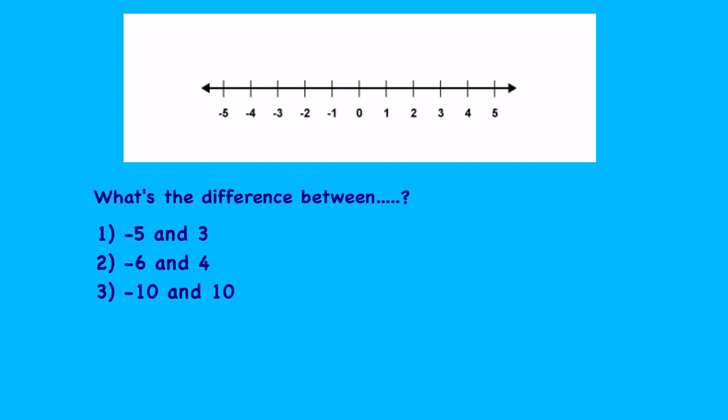Let's look at the answers. So the difference between minus 5 and 3 is 8. The difference between minus 6 and 4 is 10. Because remember that minus 6 to 0 is 6, and then from 0 to 4 is 4. So 6 plus 4 is 10. And the difference between minus 10 and 10 is 20. If you answered any of those incorrectly, just remember that next time you can draw yourself a little number line just to help yourself check your counting.